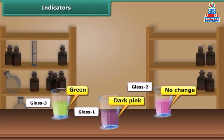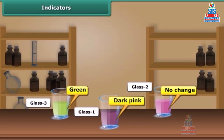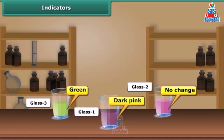We can conclude that the indicator solution obtained from China rose turns bright pink in the presence of an acid and green in the presence of a base. We can put a drop of this indicator solution in any desired food item to know whether it is acidic or basic.